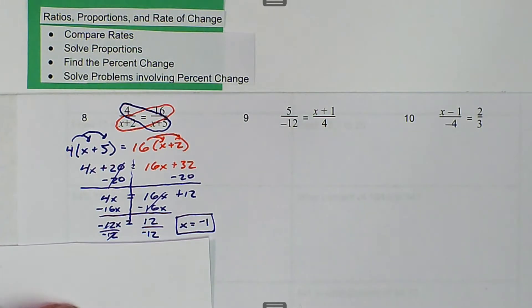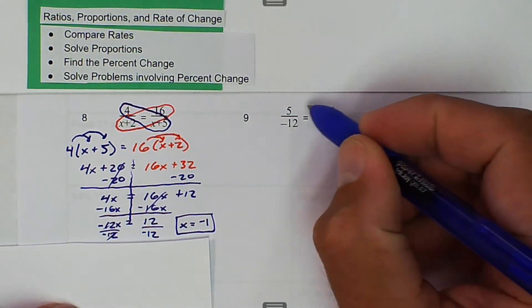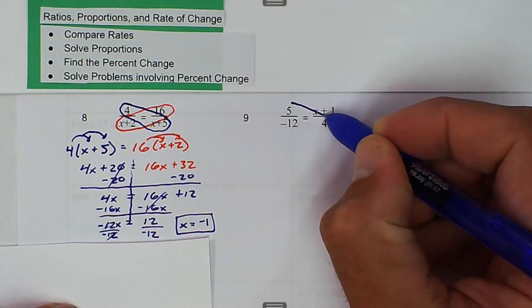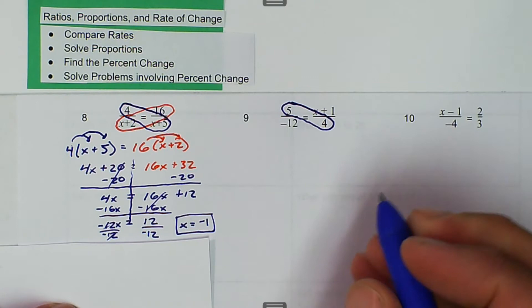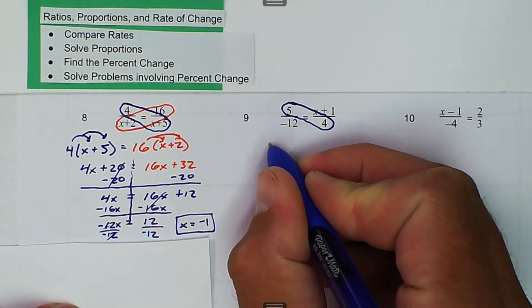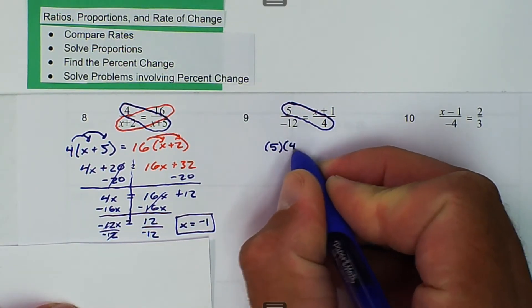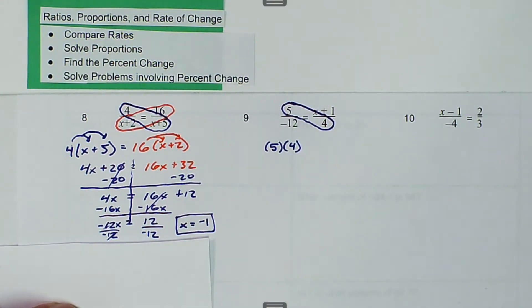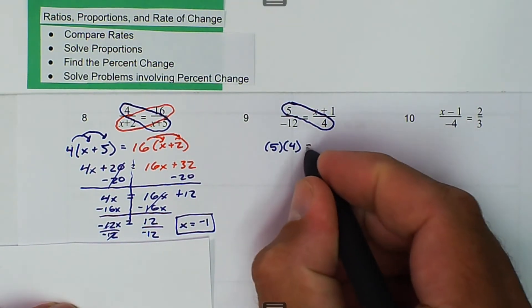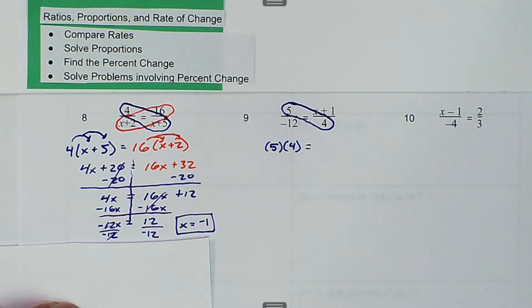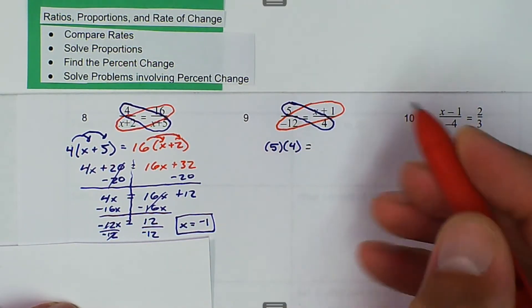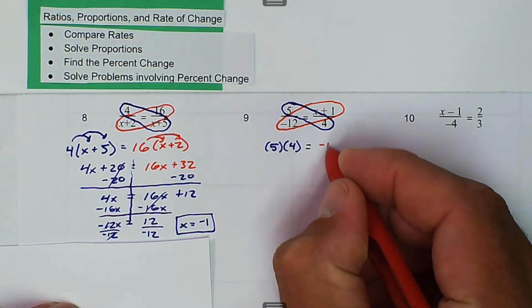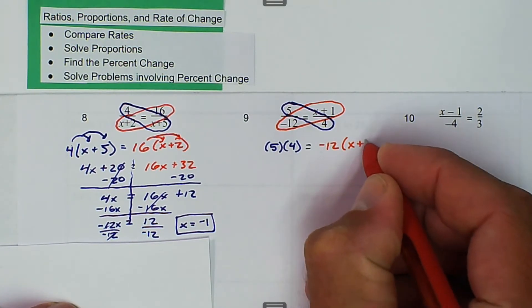Then we can look at number 9. It's the same thing. We're going to do our means, our extremes in this case, which we have 5 times 4. We use parentheses to show multiplication. And that is going to be equal to the extremes, excuse me, the means, which is negative 12 times x plus 1.